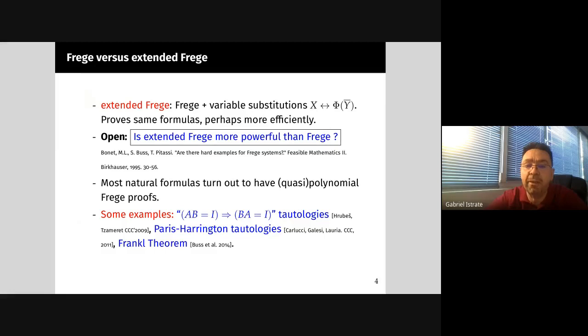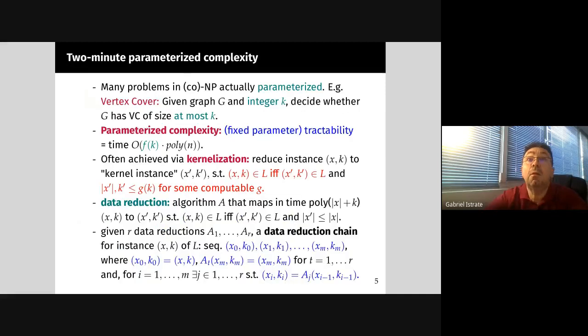A lot of natural formulas have been proposed in the literature, and most of them have turned out to have quasi-polynomial, that is sub-exponential Frege proofs, so they're not candidates for such a separation. There are a couple of examples, and there are more examples than the ones I give here.